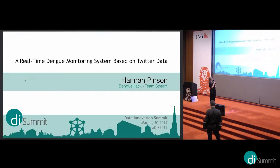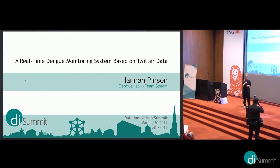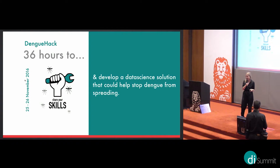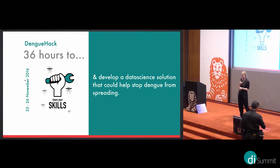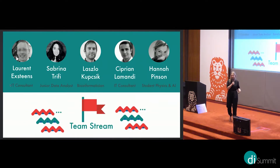My name is Hannah Pinson. I was part of the dengue hack on team Stream, and we developed a real-time dengue monitoring system based on Twitter data. The dengue hack was 36 hours to share our skills — programming, data science, storytelling — to develop a solution that could help stop dengue from spreading. Dengue strikes 50 to 100 million people every year and can be lethal, especially in small children. Our team was called Team Stream with Laurent, Sabrina, Laszlo, Cyprian, and me.